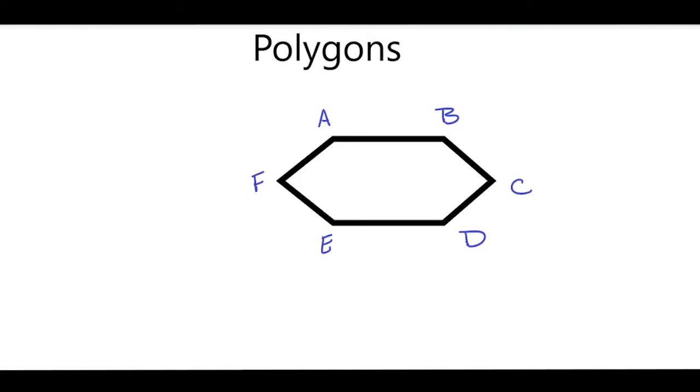And you'll notice that there are six sides, and there are also six vertices. That's the plural of vertex. And this is a six-sided polygon, and this is called a hexagon.